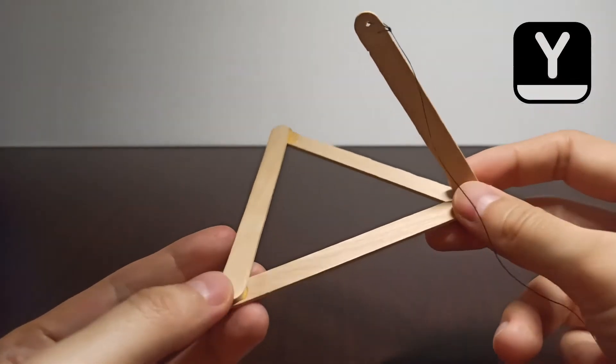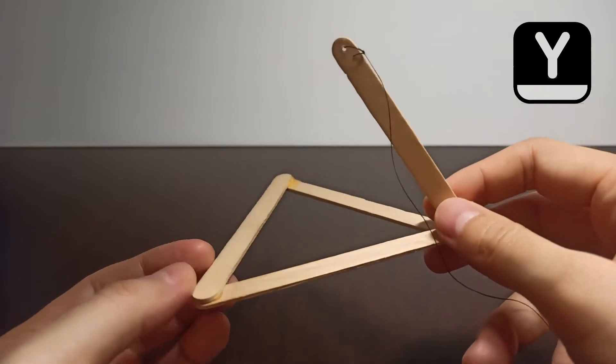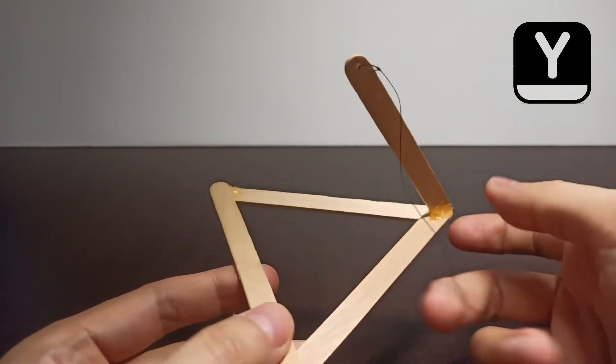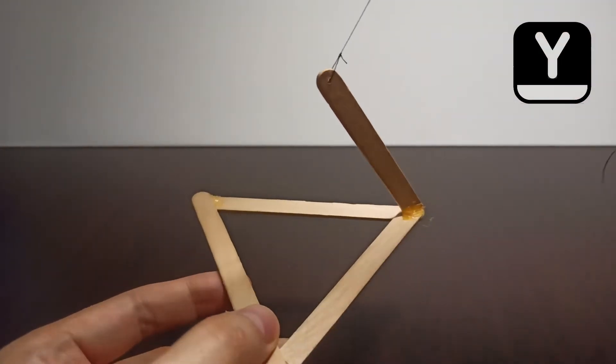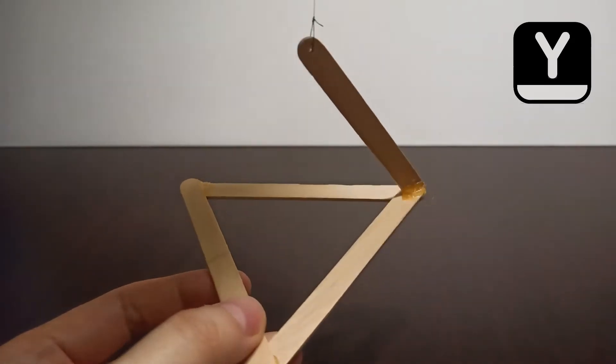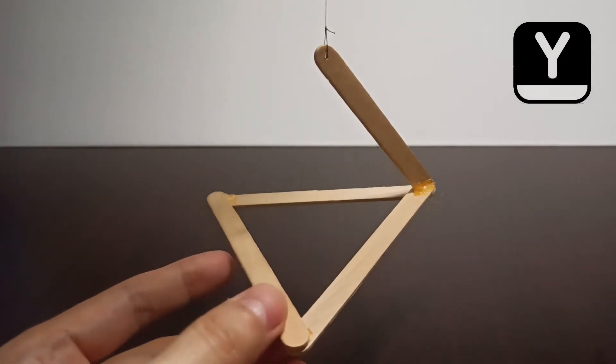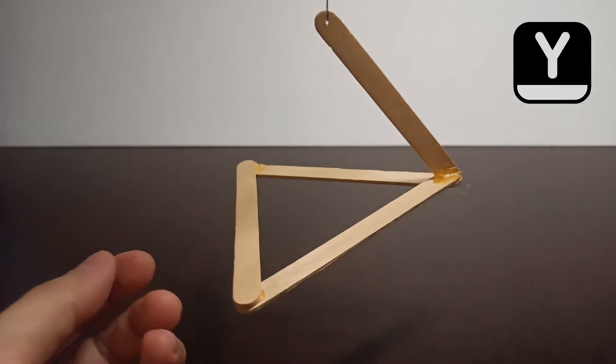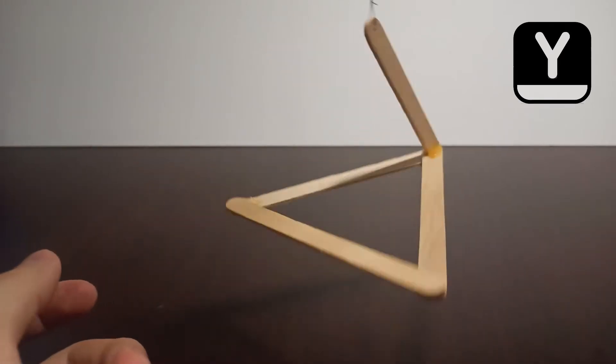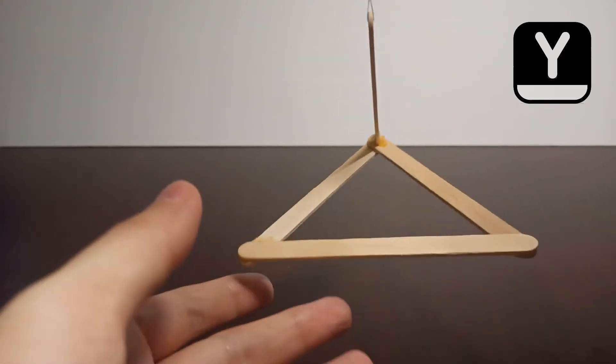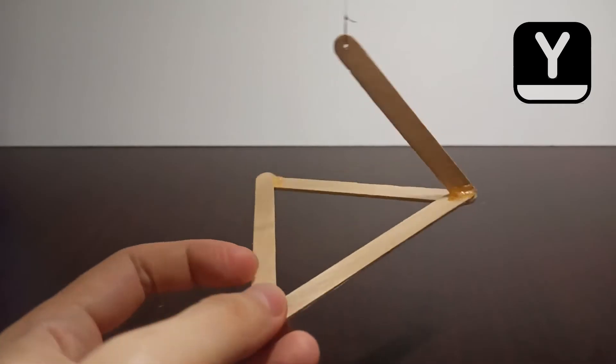First of all, let's start with this triangle with a handle. Then I hang it up with a string tied to the handle. Now you can see it is quite balanced. This is natural, because the pulling force is at the top and the weight is at the bottom.